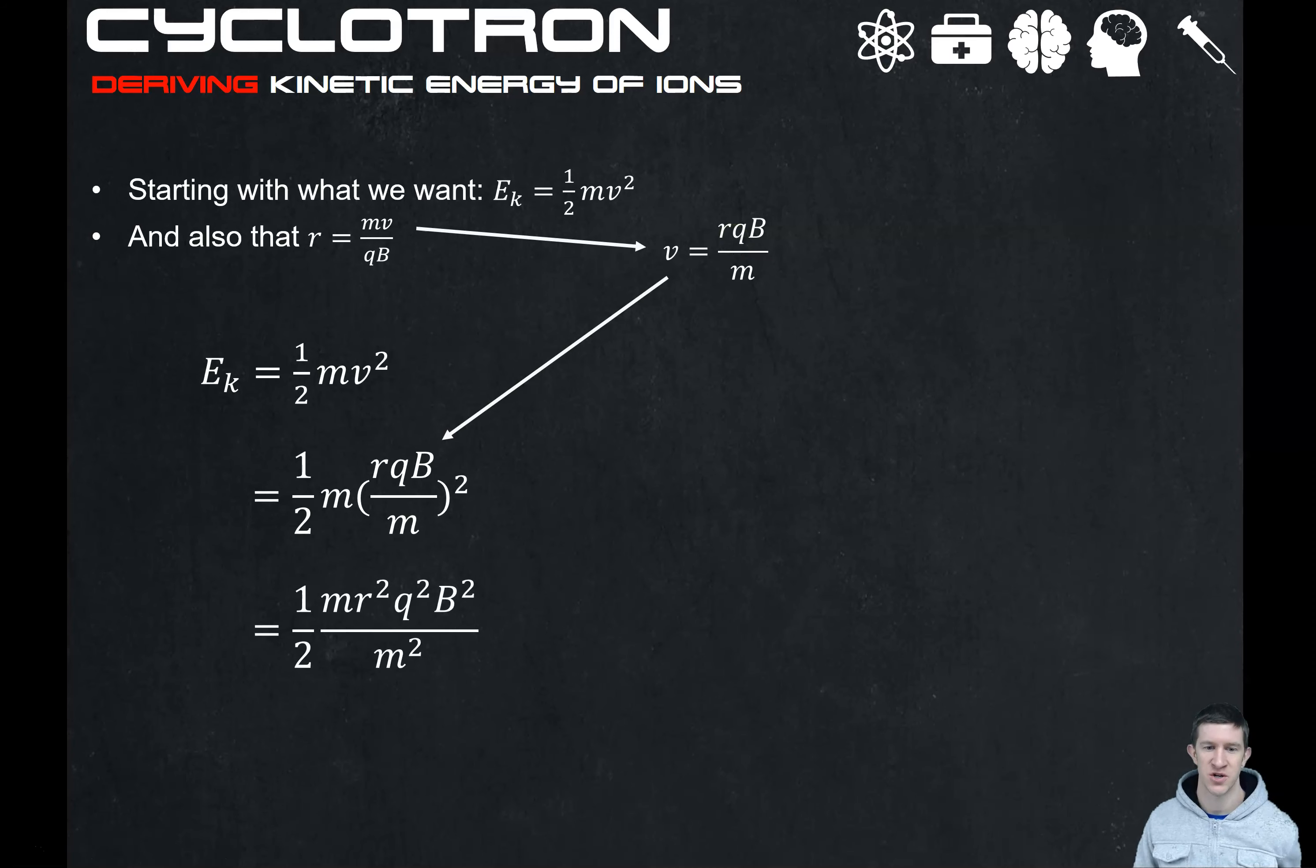We rearrange it all, tidy it all up a bit, and we get our formula for kinetic energy. So the kinetic energy of the particle is the radius squared times the charge squared times the magnetic field strength squared divided by two times its mass. That is another derivation that you need to be able to explain and show.